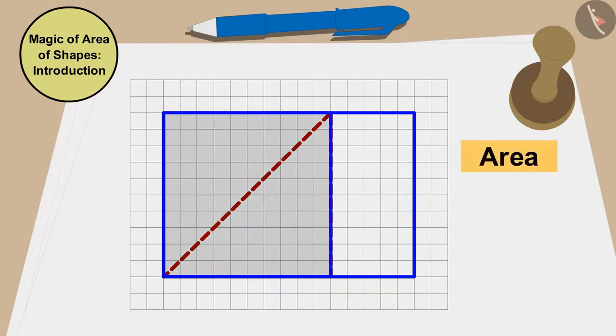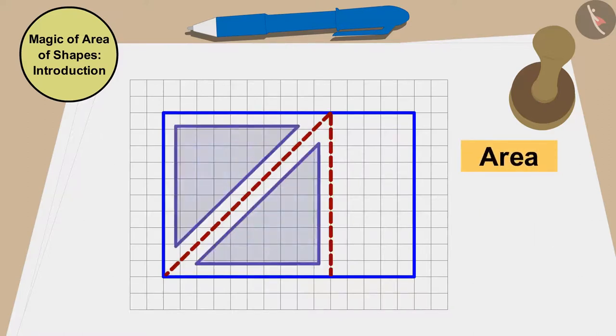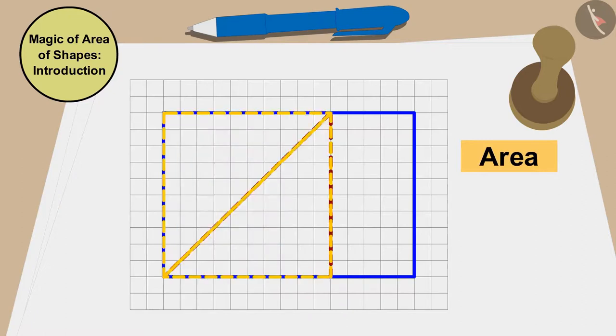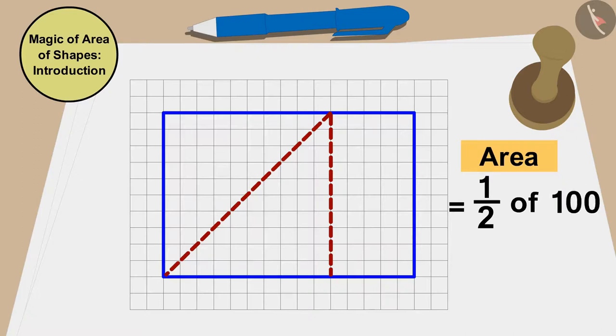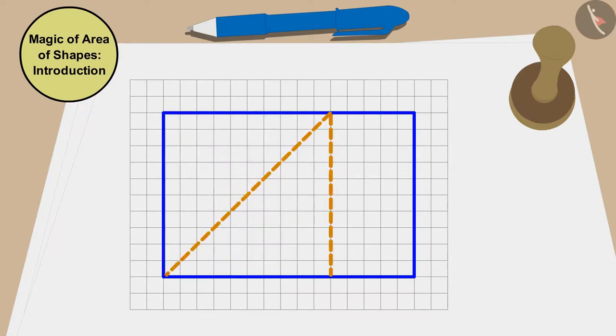The area of this square is 10 times 10, 100 square centimeters. Therefore, the area of these two triangles is exactly the same as half or 50 square centimeters of this square. We can make these two lines in more ways.